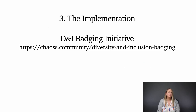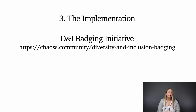At KAOS, our third goal is to deploy programs to help with deeper implementation of our metrics. Our D&I badging initiative is an example of this goal in action. The D&I badging initiative allows open source software projects and events to earn a publicly displayed badge demonstrating their commitment to diversity and inclusion on a variety of levels. It puts KAOS's diversity and inclusion metrics in action and enables a deeper analysis and implementation from project maintainers and event organizers.